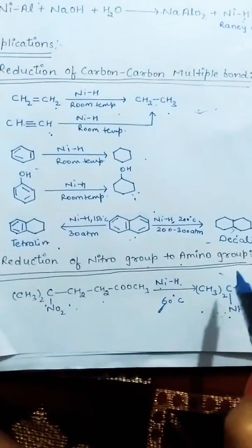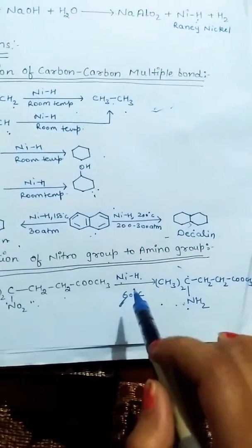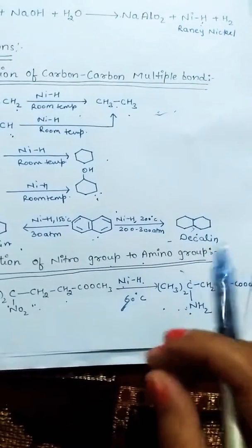Second is reduction of nitro group to amino group. In this compound, the nitro group is changed into amino group in the presence of Raney nickel at 60 degrees temperature.